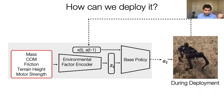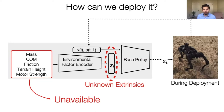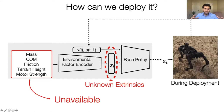How do you deploy this policy in the real world? You need access to the extrinsics, but these environmental values — mass, center of mass, friction, terrain height — are not available in the real world. And this isn't a simple sim-to-real gap question, because even if we could estimate these in the real world, these values may change at every instant. So the extrinsics have to be estimated online at every point in time.